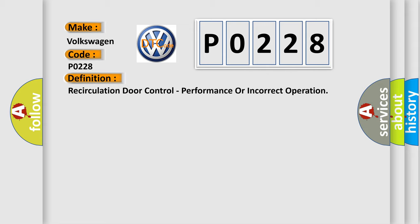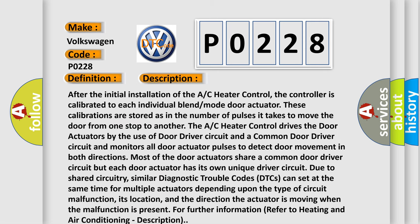And now this is a short description of this DTC code. After the initial installation of the AC heater control, the controller is calibrated to each individual blend mode door actuator. These calibrations are stored as the number of pulses it takes to move the door from one stop to another.